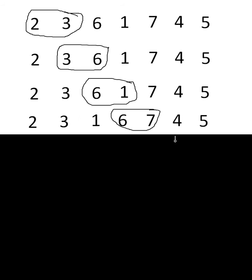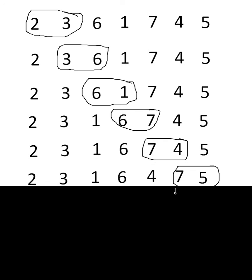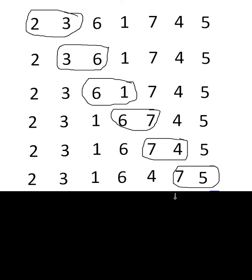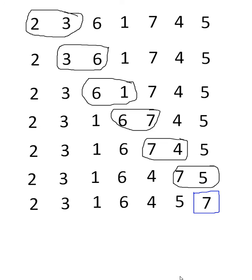Swap them round, and now we're comparing the six with the seven. They're in the right order, so move on. Seven with four is in the wrong order, swap them round. Now seven with five, wrong order, swap them round, and seven ends up being the biggest number. That's the end of the first pass.